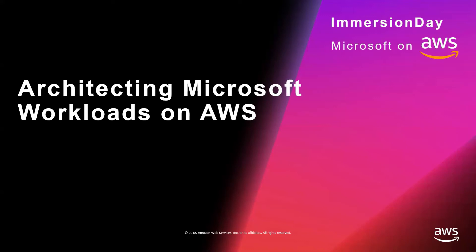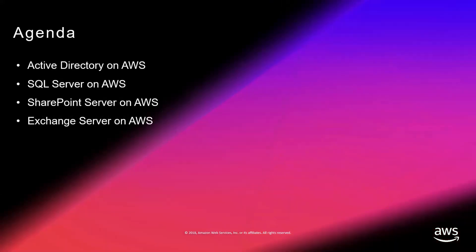We're going to jump right into architecting Microsoft workloads on AWS. Today's agenda: we're going to talk about Active Directory, then SQL Server, then SharePoint, and finally finish off with running Exchange Servers.